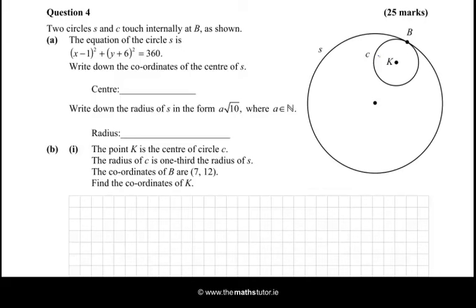Write down the coordinates of the centre of S. Well, this equation is in the format (x - h)² + (y - k)² = r². That's on page 19 of your tables. In that case, h and k is the centre, so we have that (1, -6) must be the centre of circle S.